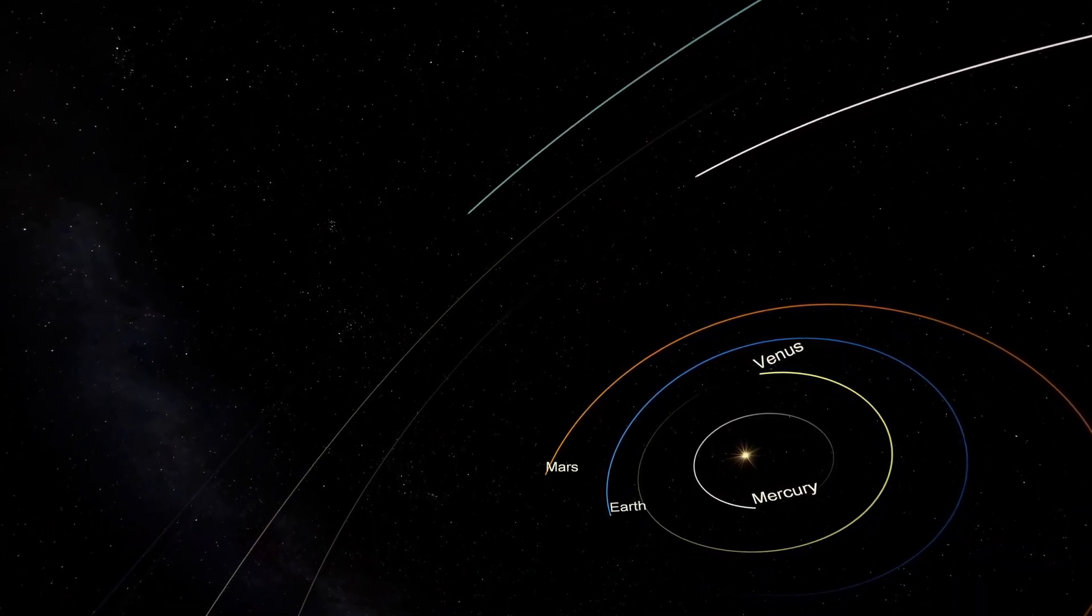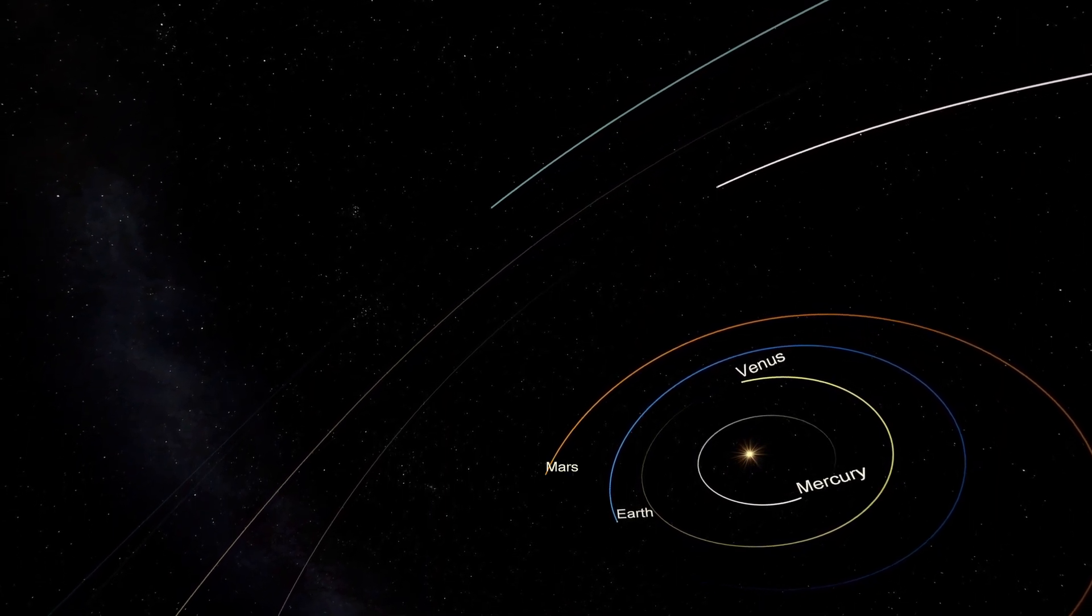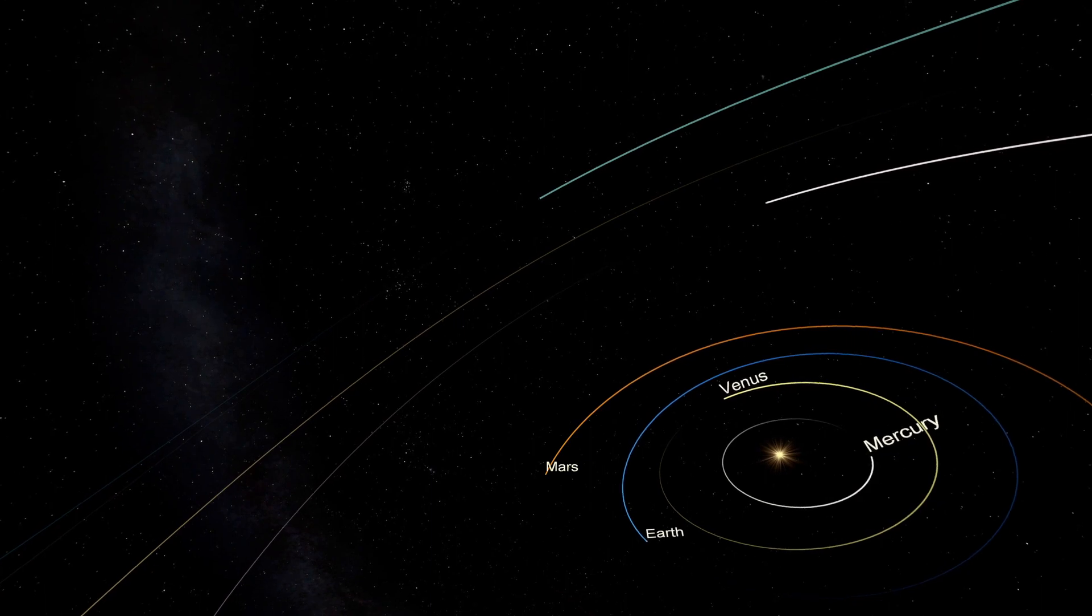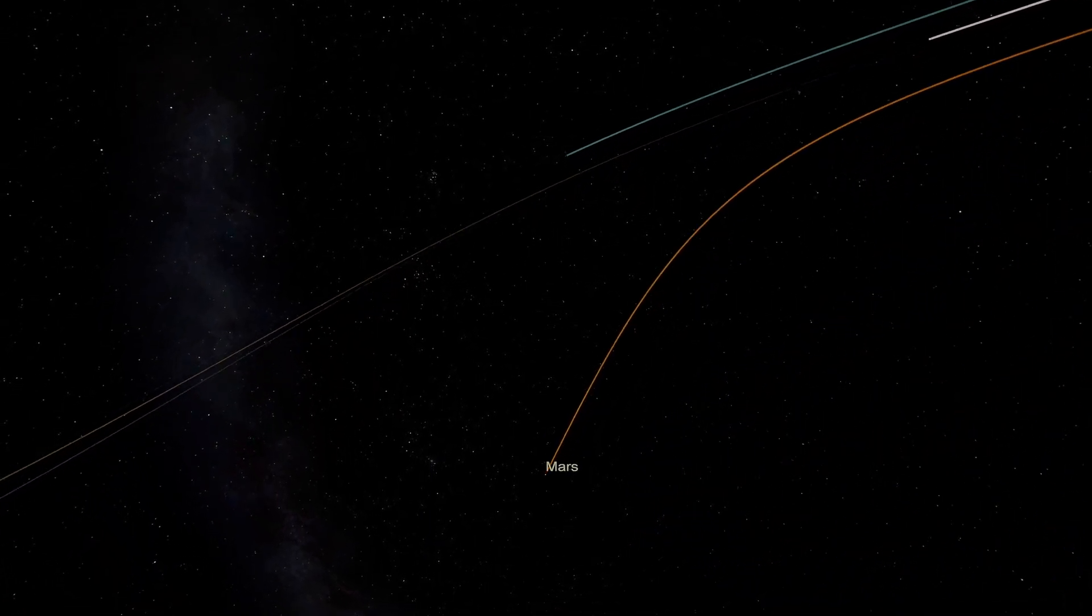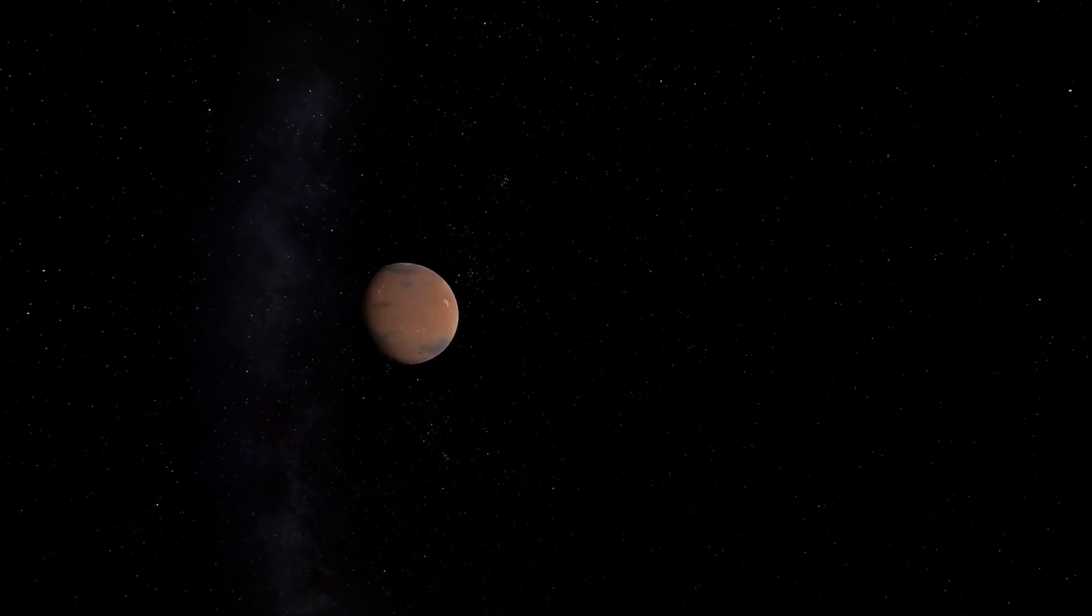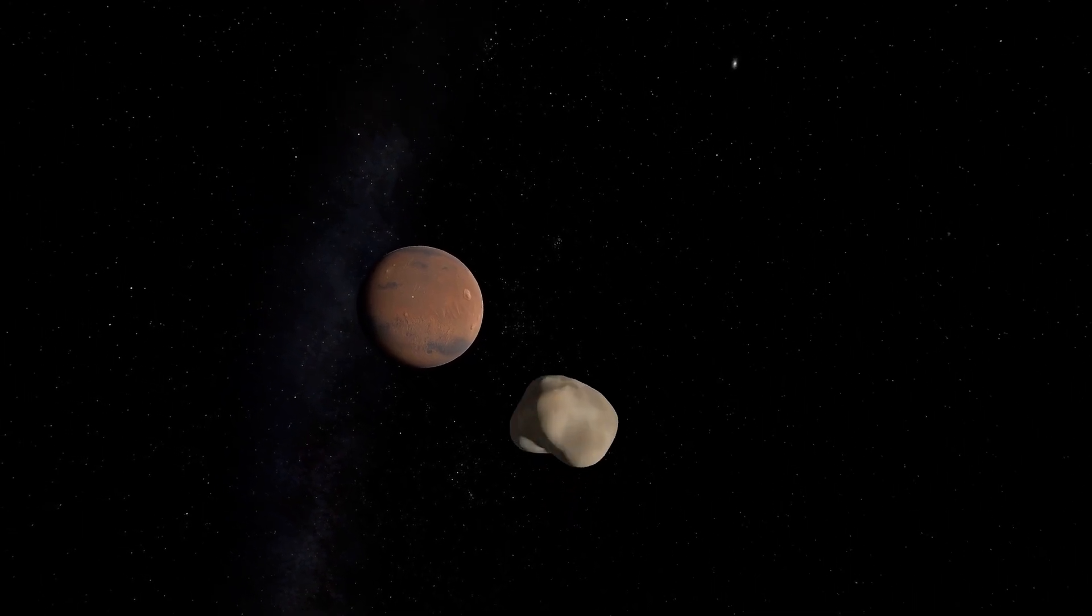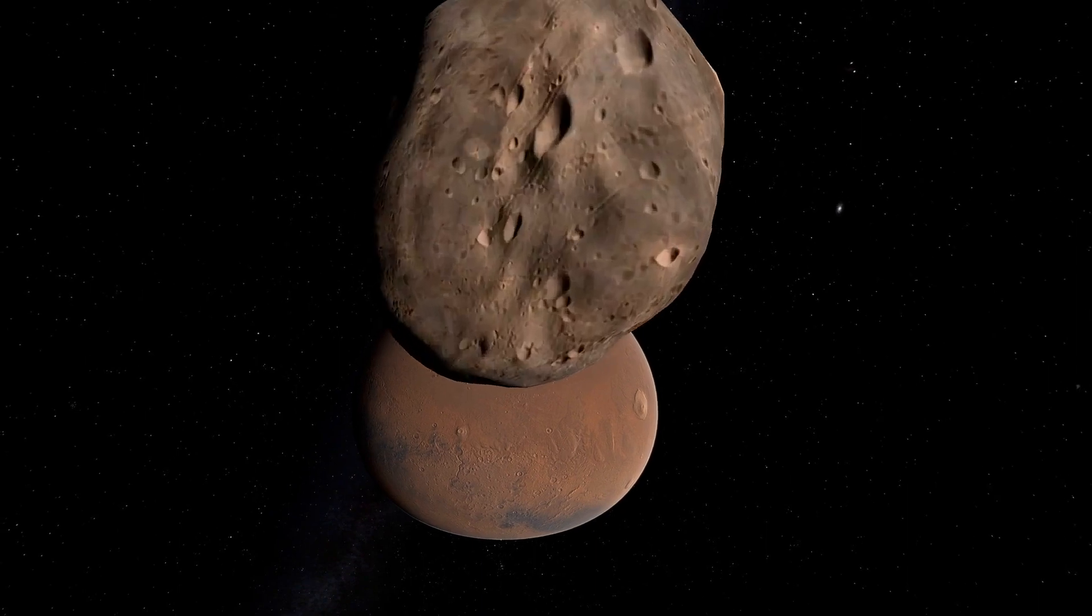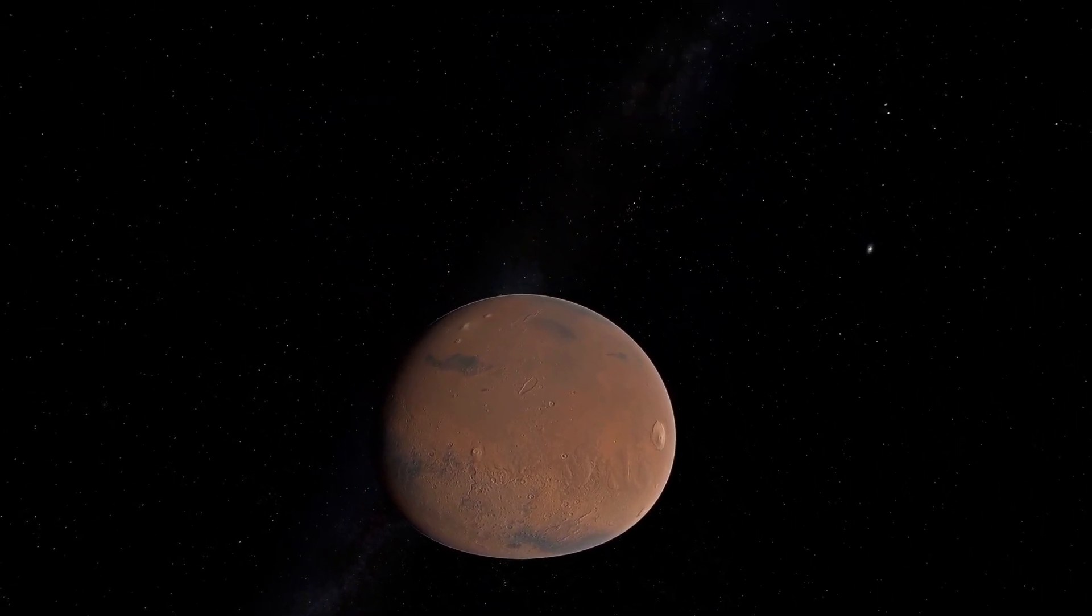Do solar eclipses happen on other worlds? Mercury and Venus have no moons, so there is no opportunity to see eclipses from these planets. The planets with moons lie beyond Earth's orbit. The red planet Mars has two moons, Phobos and Deimos, but they're very small, tiny compared with Earth's moon.